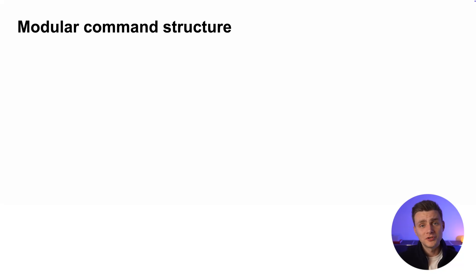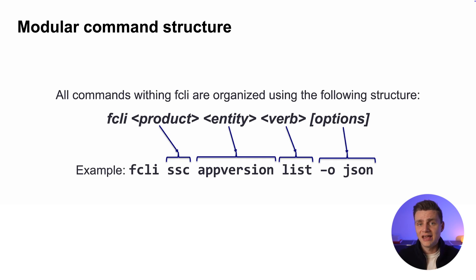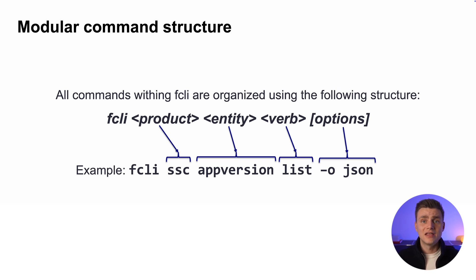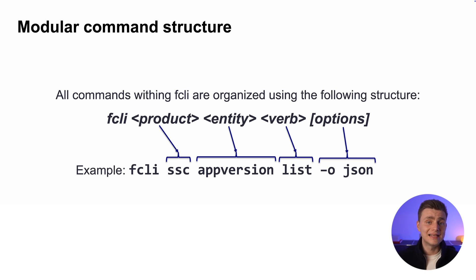I also want to give you a short overview of the command structure of FCLI, which is pretty easy to understand and really modular. The first thing you see in every command is FCLI itself. Then you enter the product — for example, SSC, ScanCentral SAST, ScanCentral DAST, FOD, or the built-in utilities. Then you have the entity — for example, in SSC the app-version. After that you have the verb, like list, create, or get. And then you have the options, like if you want to output results into JSON format. I will talk a lot more about this in the next video, but I just wanted to give you a short overview of the modular command structure.